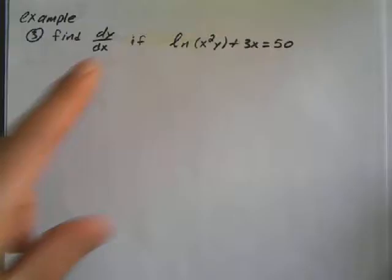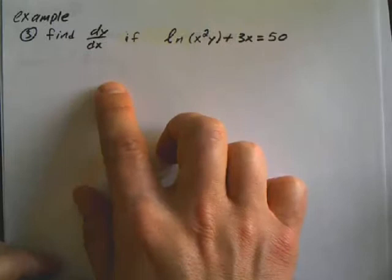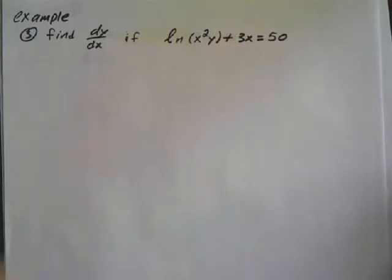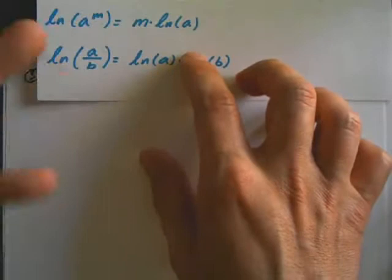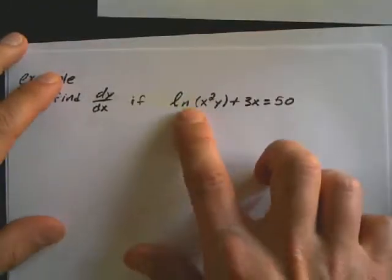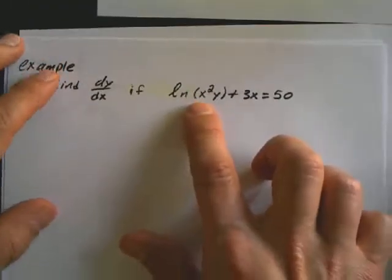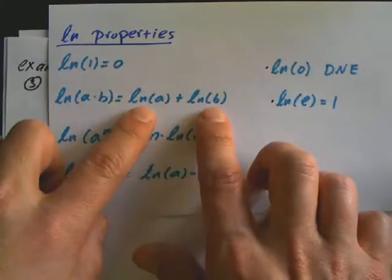This one involves an implicit derivative. Like the previous video, I want to simplify my expression as much as possible if I can. I notice that inside this logarithm, I'm multiplying x squared times y. I'm going to use this property that says I can add individual logarithms.